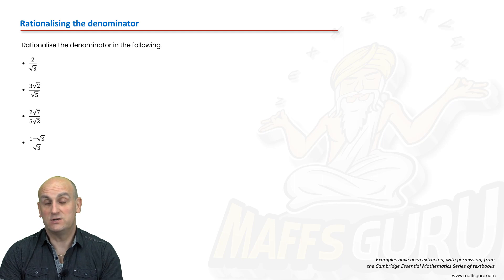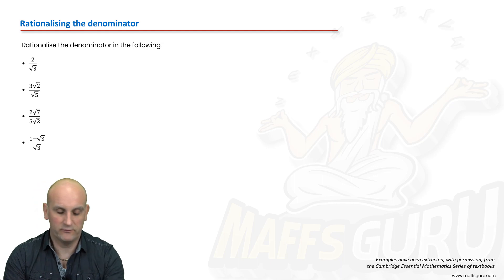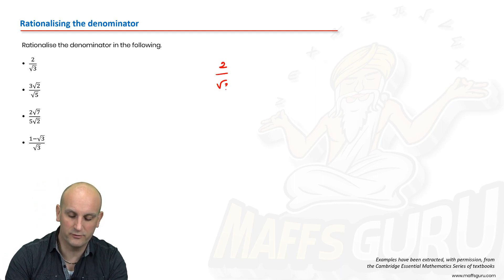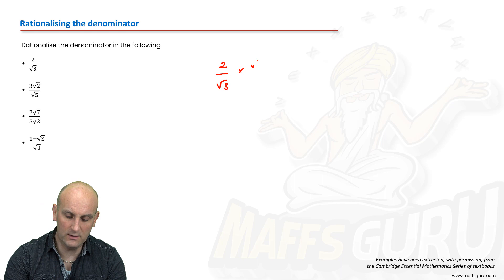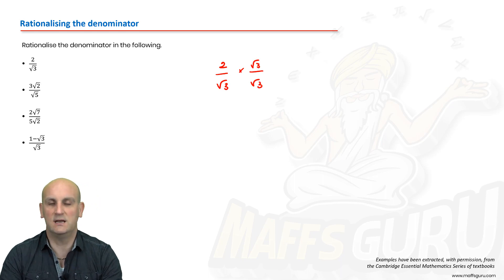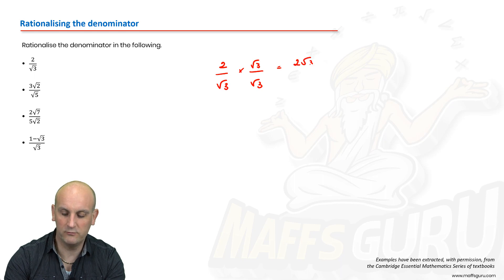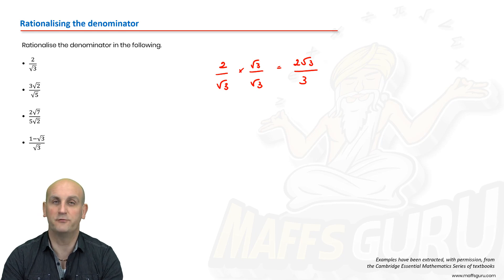If I want to rationalize the denominator, that just means I have to get rid of the square root sign. If I look at this first example of 2 over root 3, let's look at the bottom. What is there? It's a root 3. What don't I want there? Root 3. I can't change the ratio of this fraction, but I can multiply by 1. So if I now multiply by root 3 on root 3, when you multiply a surd by itself, the root sign goes. So 2 times root 3 becomes 2 root 3, and root 3 times root 3 becomes 3. Ladies and gentlemen, I've just rationalized my denominator. That's quite literally all there is to it.